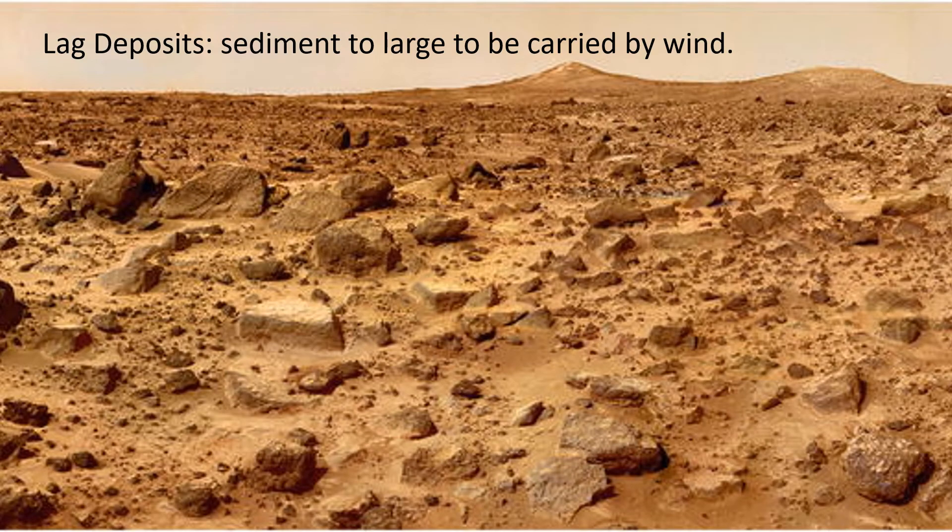Lag deposits, which are gravel-sized sediments that are too large to be picked up by the wind, form a deflation pavement in areas where erosion is greater than deposition. These deposits can be found interbedded with the remnants of sand dunes as they migrate across the desert.